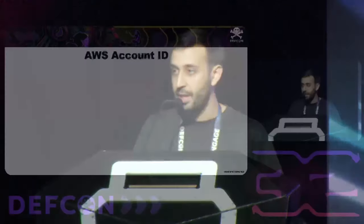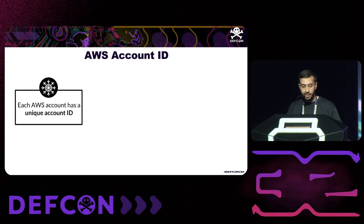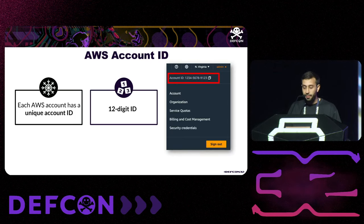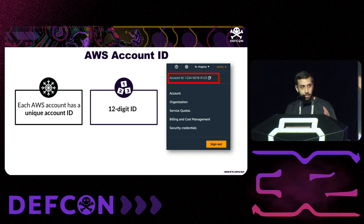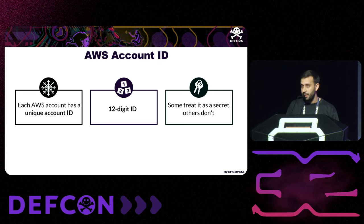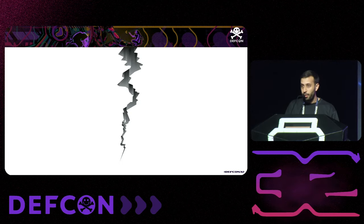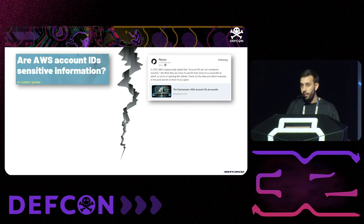The most severe of these vulnerabilities could allow an attacker to add an admin role to another account. Let's start by discussing the most debatable topic on AWS: the AWS account ID. Each AWS account has a unique identifier — 12 digits — and the most important thing is that some treat it as a secret and some don't.